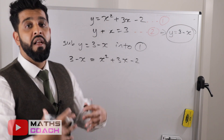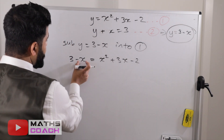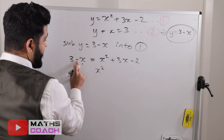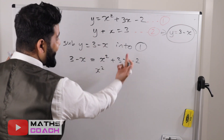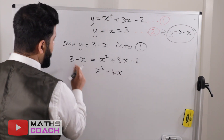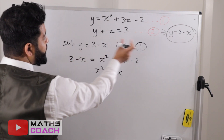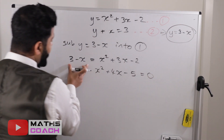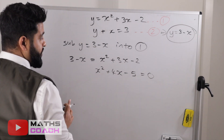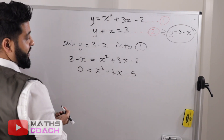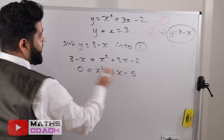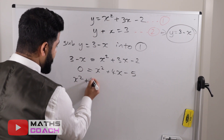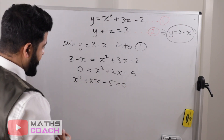Now we simplify by collecting like terms. We have x squared with nothing like it, so we write x squared. Moving negative x to the other side adds x, giving 4x. Moving negative 2 and taking the 3 to the other side gives minus 5. Nothing remains on the left, so we set it equal to zero, giving us x squared plus 4x minus 5 equals 0.